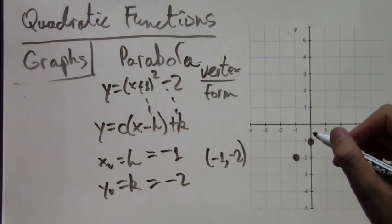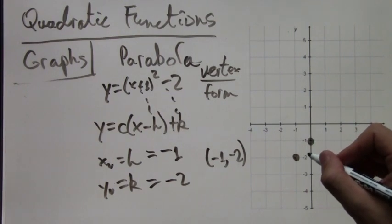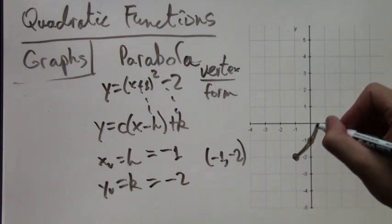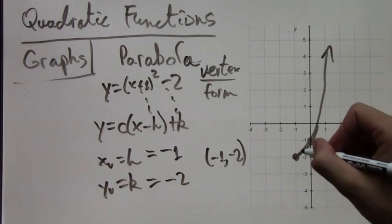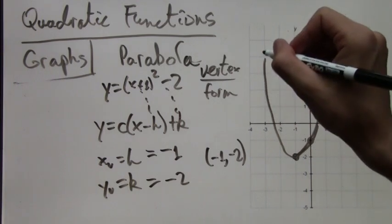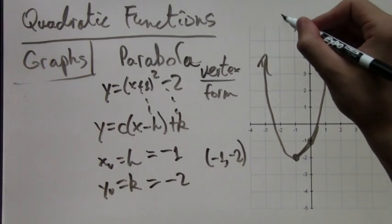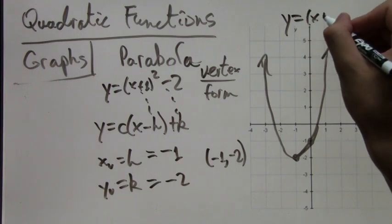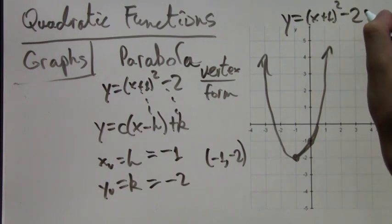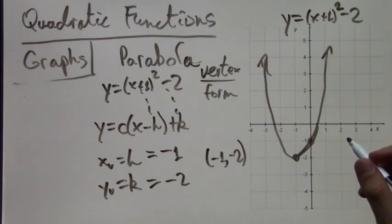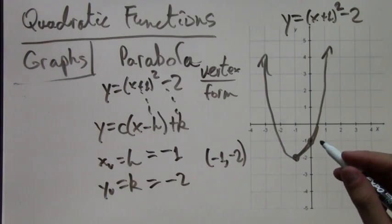Now we can draw our parabola. We connect those two points with a curve, and then on the other side, it swings back up symmetrically. We'll label it y equals (x + 1)² - 2. I hope it's more or less clear to you now how to graph quadratic functions. Thank you for watching this video lecture.